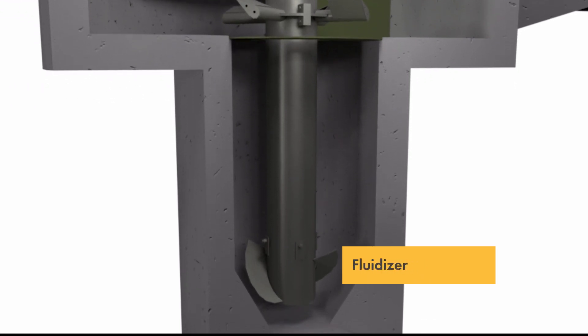The fluidizer is attached to the bottom of the drive tube, keeping the grit in the hopper in constant motion to prevent packing.